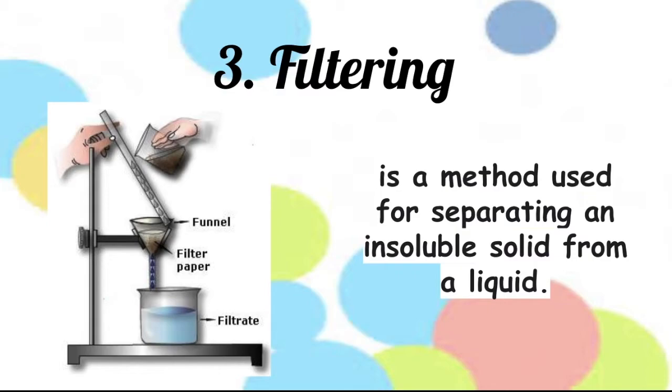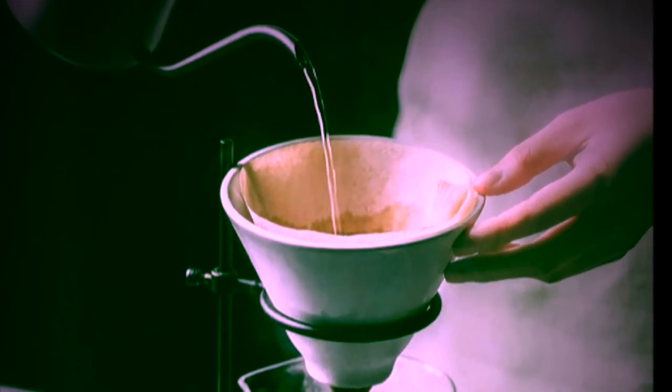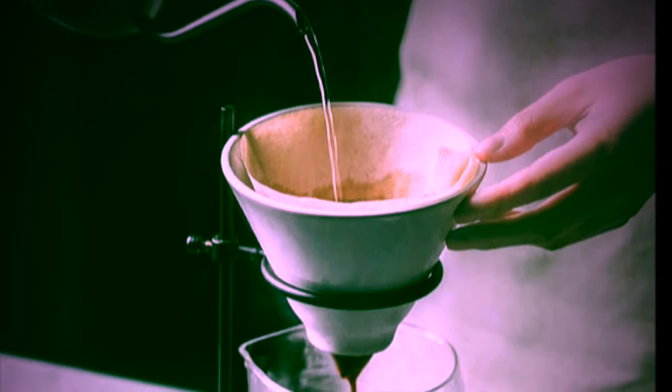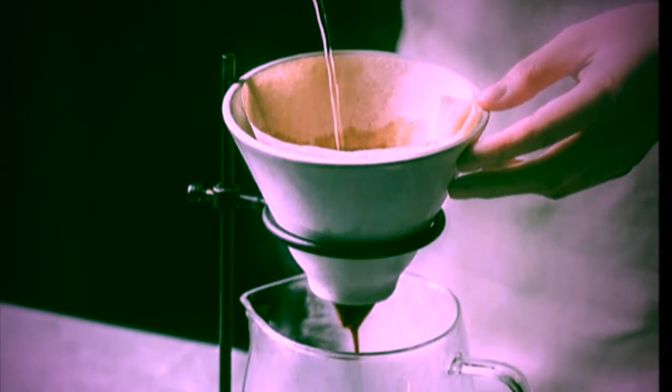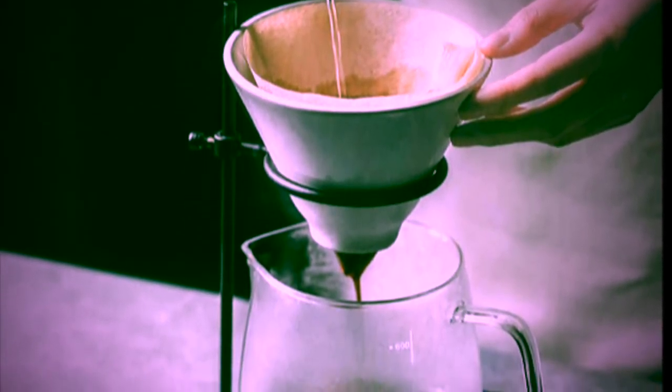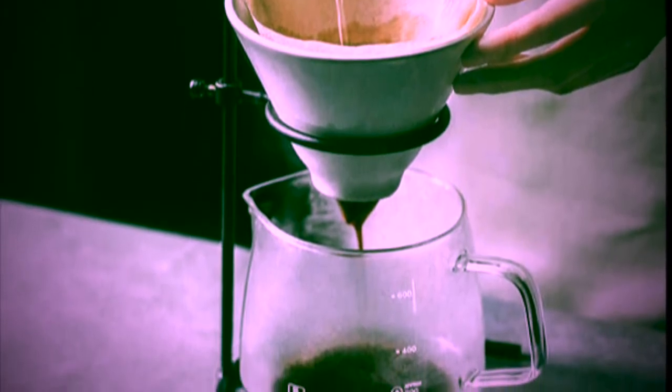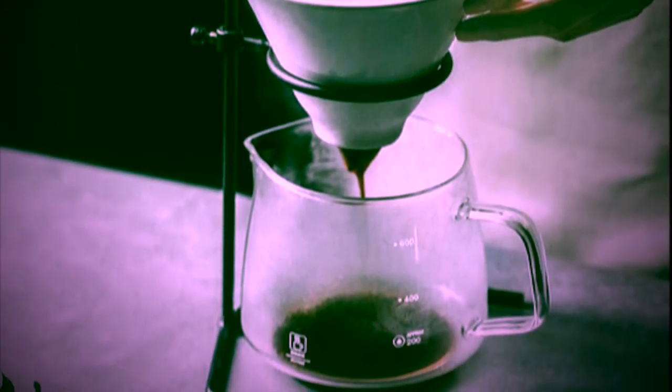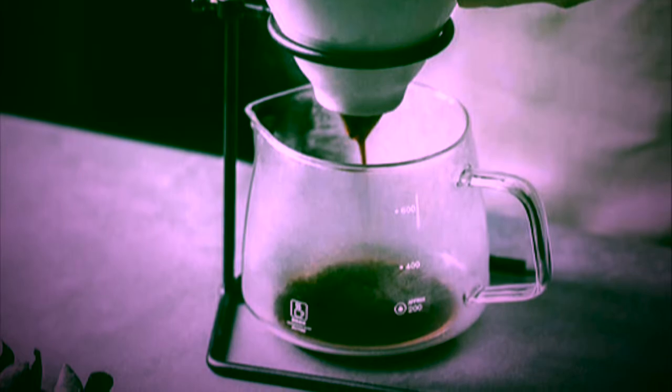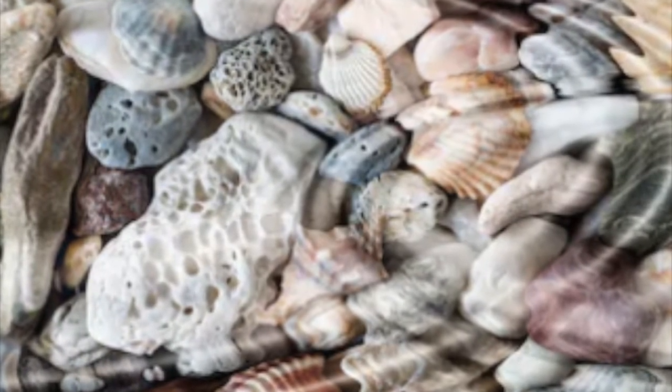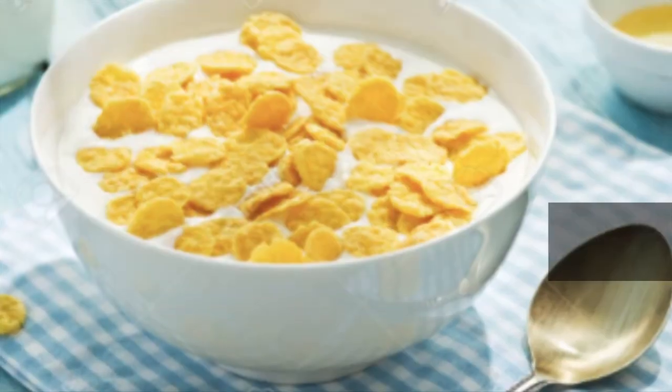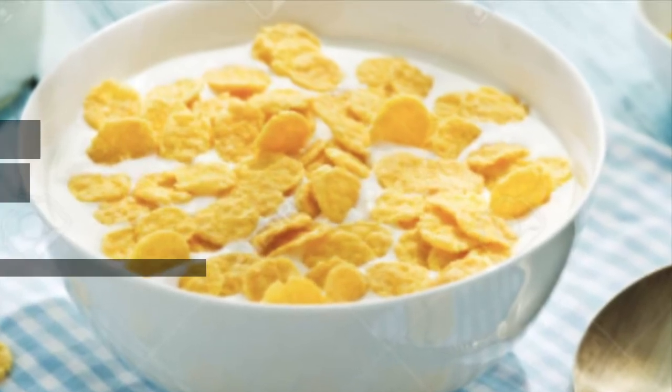Here are the examples of mixtures that can be separated using filtering. Brewed coffee. Brewing coffee involves passing hot water through the ground coffee and a filter. The liquid coffee is the filtrate. Another examples were bubbles in water, cornflakes in milk, and water in pasta.